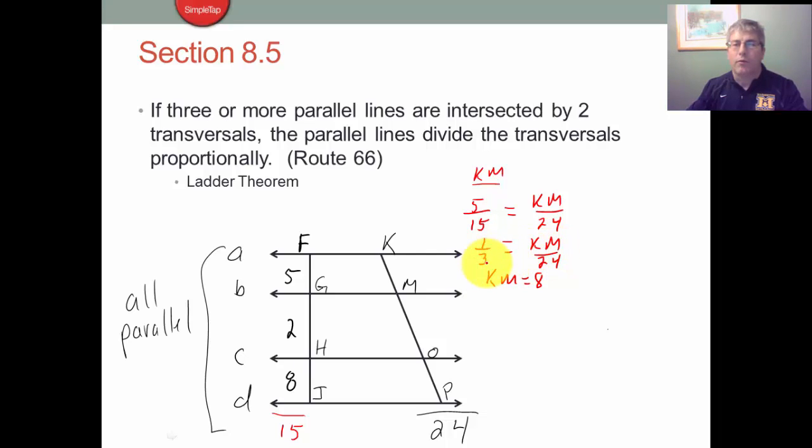1 times 24 equals 3 times KM, or 8 is 1 third of 24. So we get KM is 8.